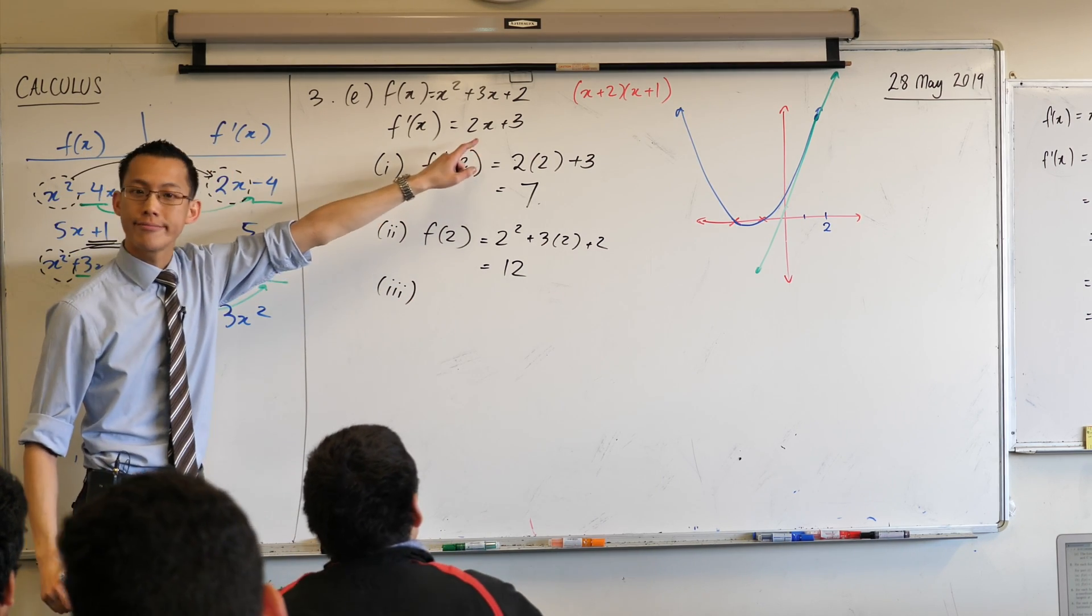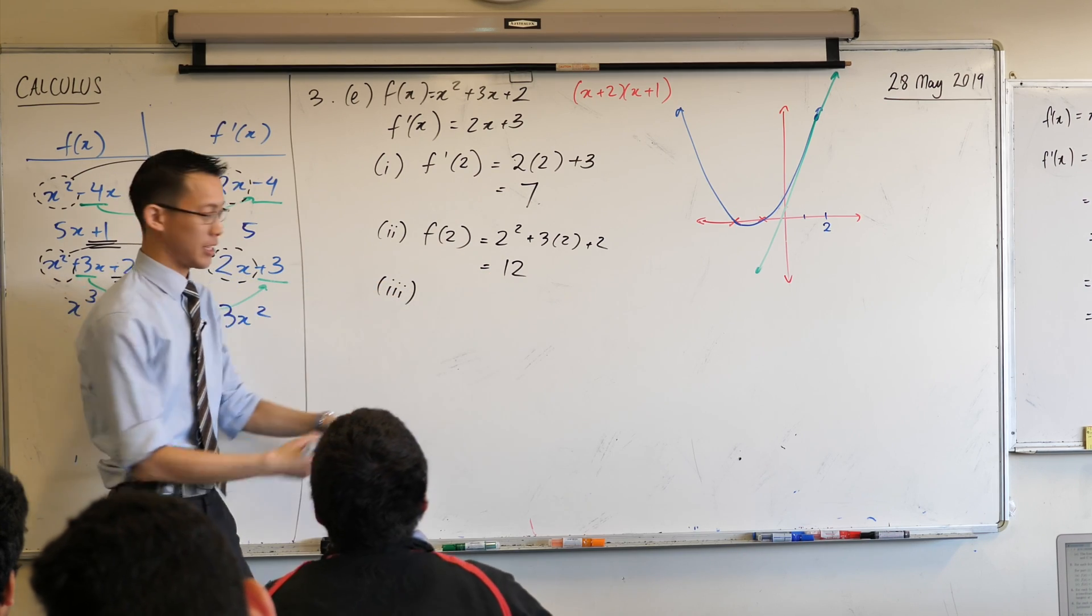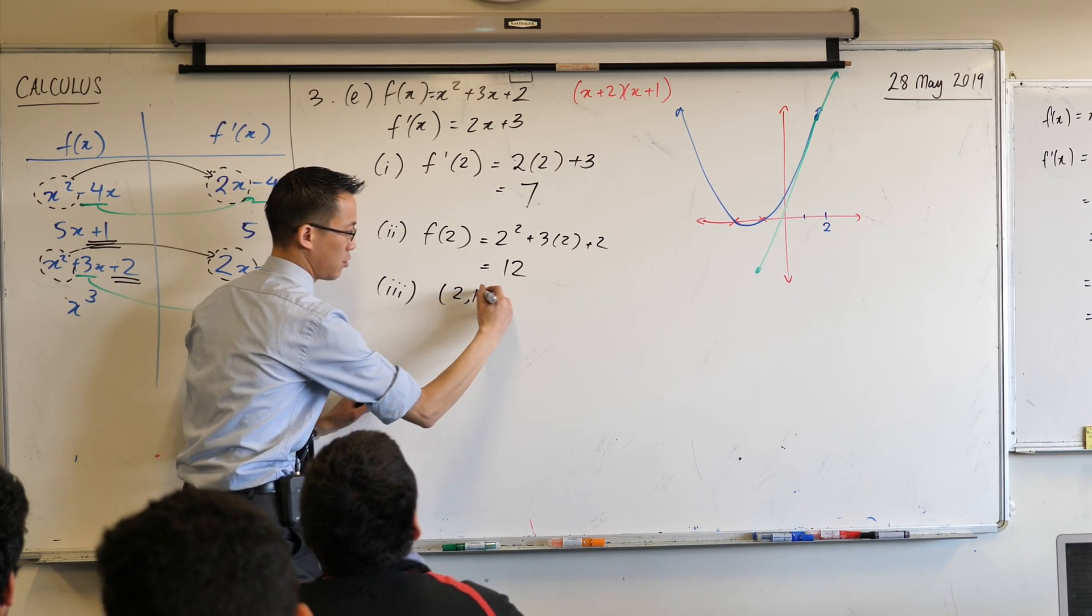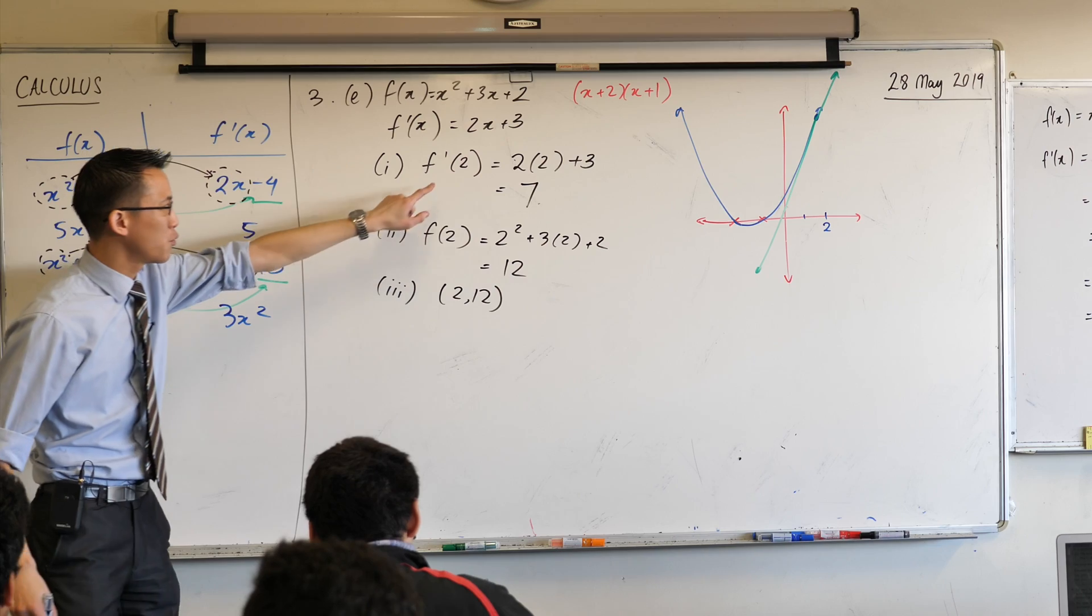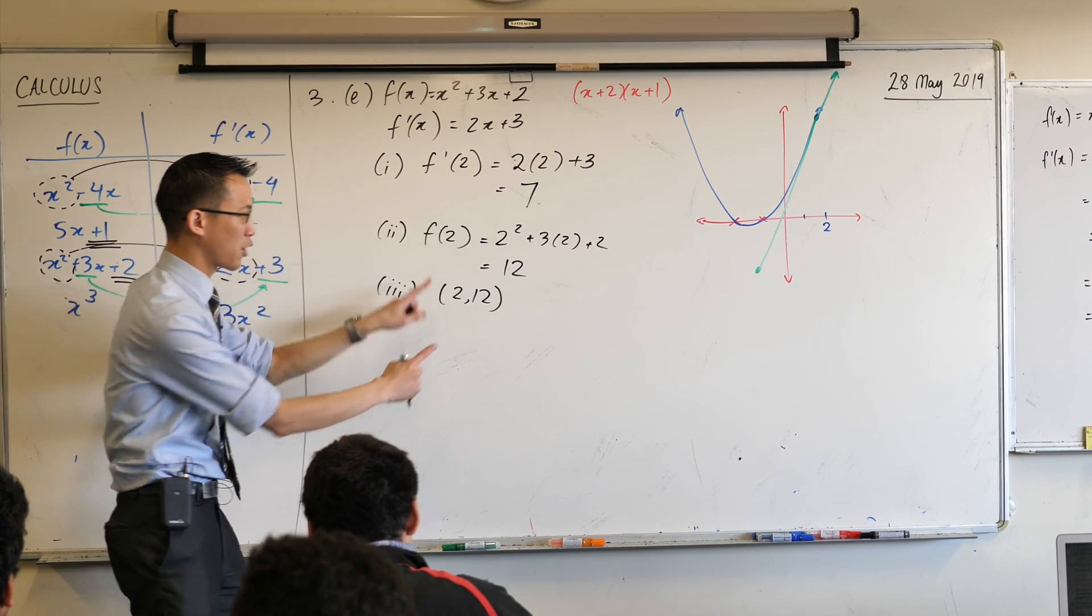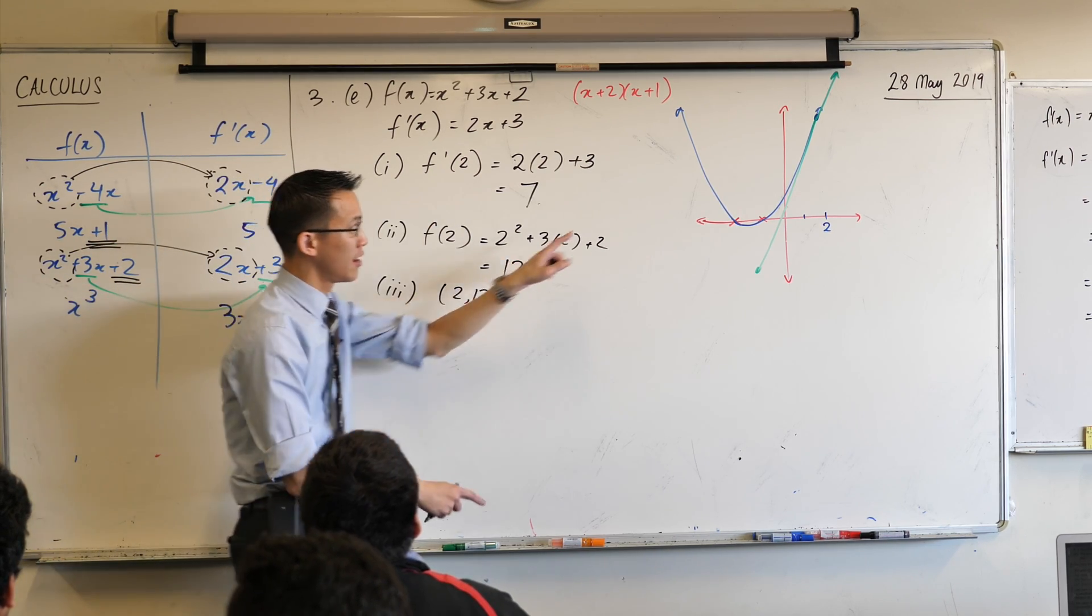We've got an x value, namely 2. We've got a y value, namely 12. So I'm going to write them down together. 2 and 12. And using the derivative, the gradient function, I also know the gradient at this point right up there.